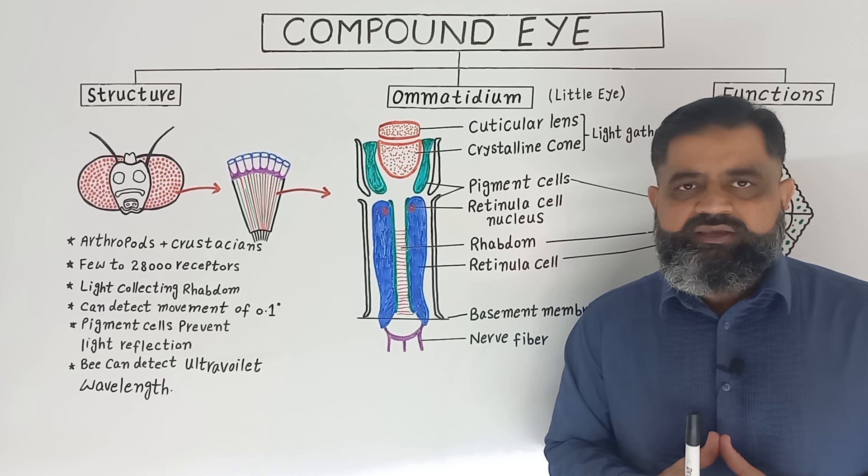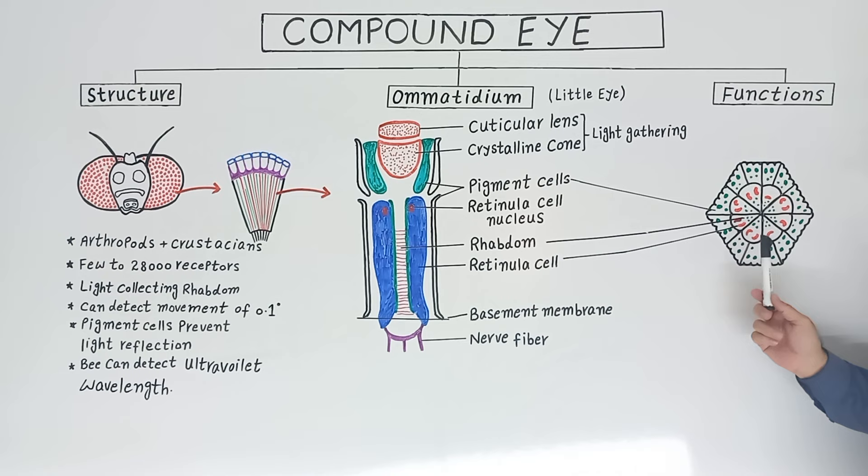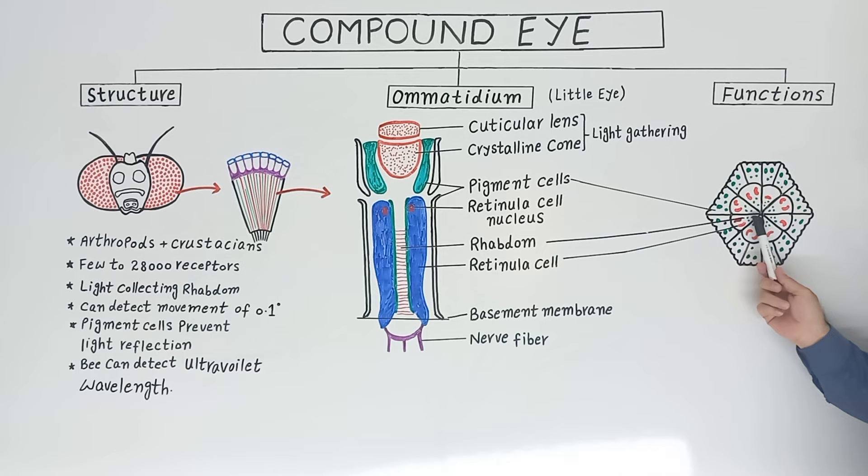To understand it more clearly, you can see the cross-section of an ommatidium here. Just outside the ommatidium you can see the pigment cells shown in green, and in the center you can see the rhabdom where light collects. The rhabdom is surrounded by retinula cells, usually eight in number.